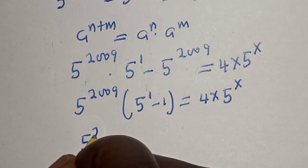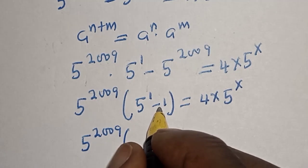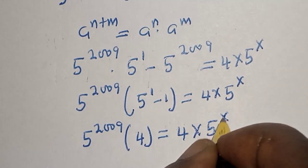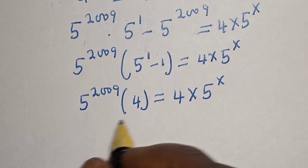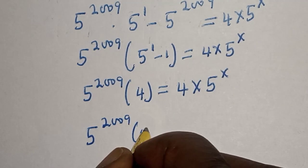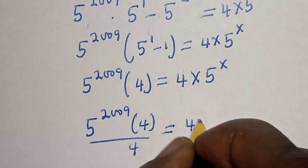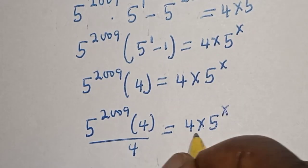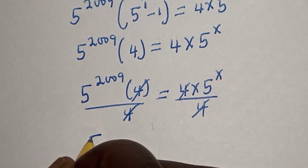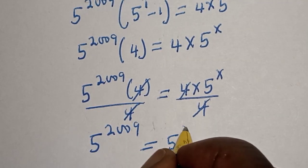Now this is 5 raised to power 2009 times bracket 5 minus 1, that is 4, is equal to 4 multiplied by 5 raised to power s. Dividing both sides by 4, we get 5 raised to power 2009 is equal to 5 raised to power s.